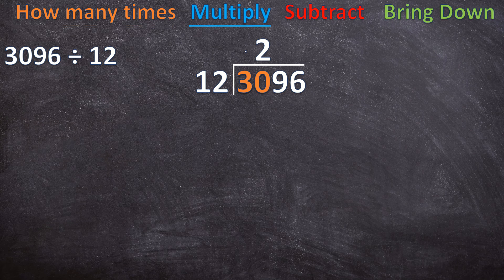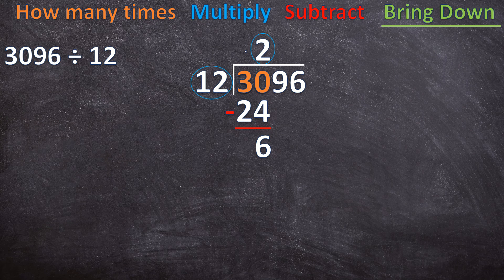Now I move on to multiply — that's the next step. I take the 2, multiply it with our divisor, and write the answer beneath the 30. So 2 times 12 is 24. Now I move on to subtract: 30 minus 24 is 6. And now the last step is bring down — I take the next digit, the 9, and bring it down next to the 6. Now I start my steps all over again.